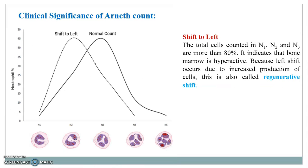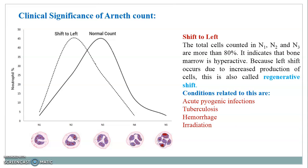In a shift to the left, the total cells counted in N1, N2, and N3 stages are more than 80%. This indicates that bone marrow is hyperactive, because left shift occurs due to increased production of cells — this is also called regenerative shift. Conditions associated with this include acute pyrogenic infections, tuberculosis, hemorrhage, and irradiation.